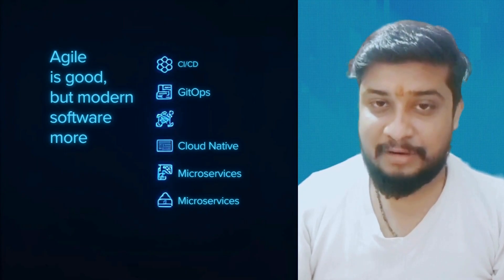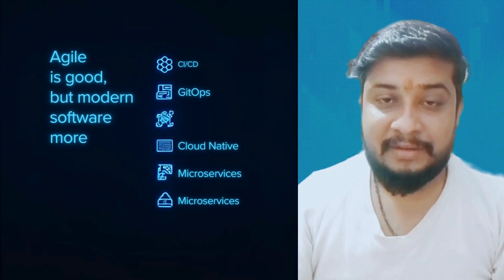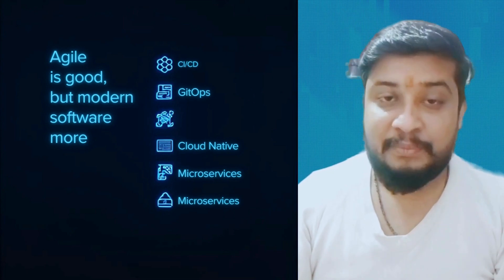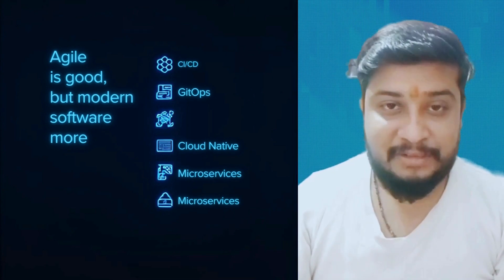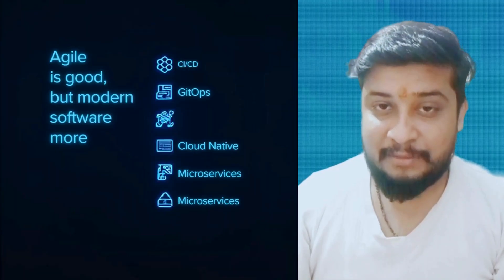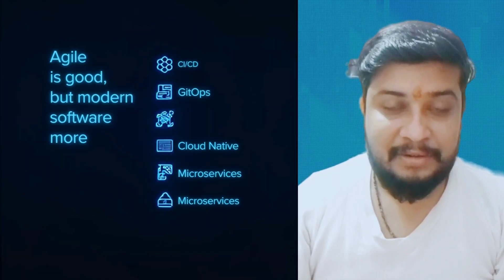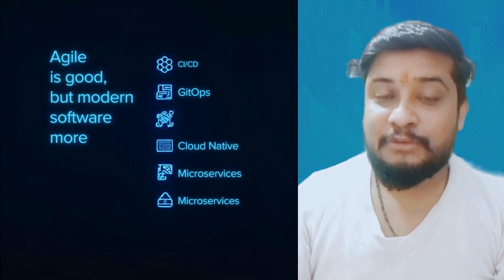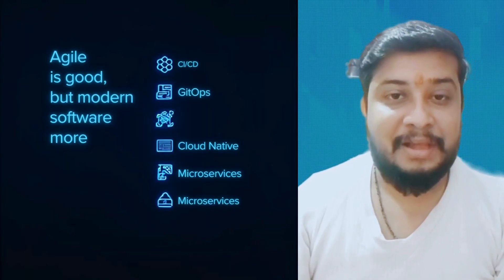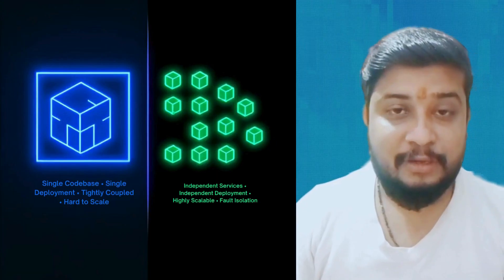Now the big question: what comes after Agile? There is no official Agile 2.0, but the industry is already using the next stage of Agile — Agile plus DevOps, plus CI/CD, plus GitOps, plus cloud-native development, plus microservices, plus Agile at scale like SAFe. The future is Agile plus DevOps plus cloud plus automation.